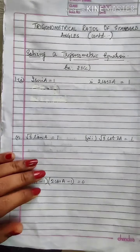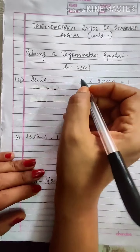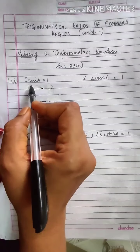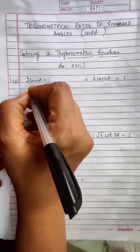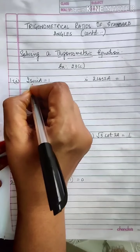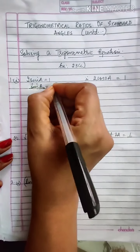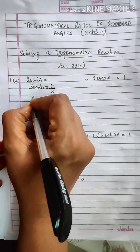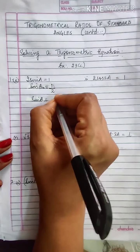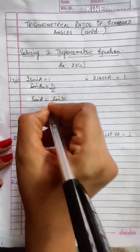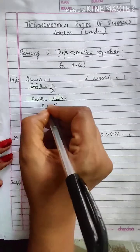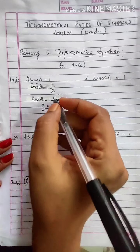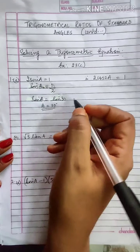So to begin with, solving a trigonometrical equation — I am taking a few sums from Exercise 23C. The first one: 2 sin A is equal to 1. This is a trigonometrical equation. Transposing 2 to the right hand side, you get sin A is equal to half. You know for which angle the value of sin is half — it is sin 30. So A is equal to 30. You are not supposed to cancel sin because it is a ratio; that is not allowed while solving trigonometric equations. So you just write A is equal to 30.